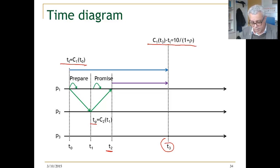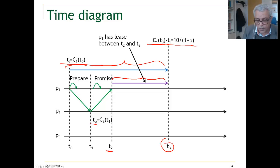This is now T3, which is an interesting thing. This is a period. What is this period? It is the clock of T3 minus TL should be 10 divided by 1 plus rho. It means that this period should be 10 divided by 1 plus rho, and this is the period where he can accept reads. P1 has the lease between T2 and T3.